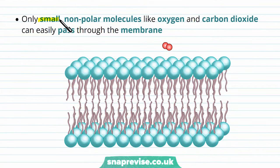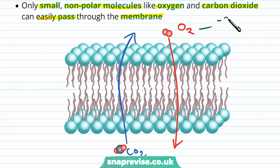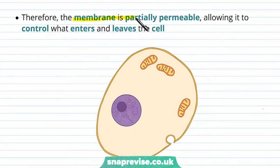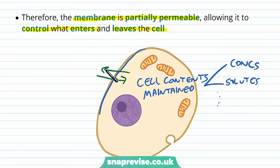Only small non-polar molecules like oxygen and carbon dioxide can easily pass through the membrane. Oxygen can enter cells for respiration and carbon dioxide can leave as a waste product because they are small — able to weave between the molecules — and they're non-polar and uncharged, so they're not surrounded by water and can squeeze between the tails without bringing water into this environment. This means membranes are partially permeable, allowing control over what enters and leaves the cell. Cell contents must be maintained — concentrations of ions and various solutes — so having an effective barrier keeping the two environments separate is very important.